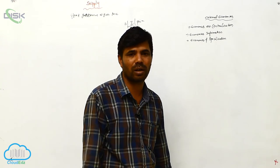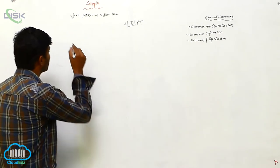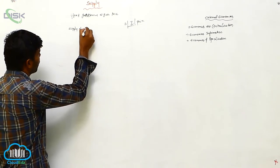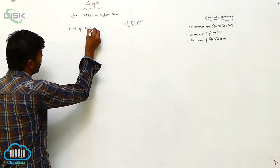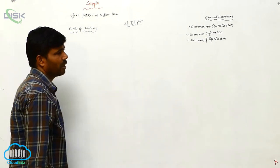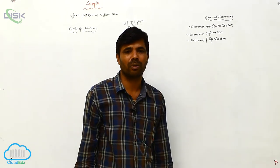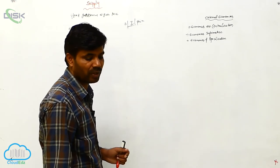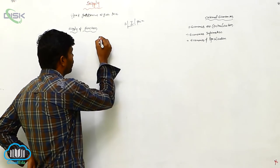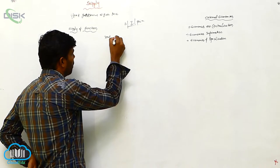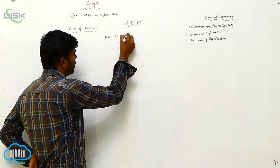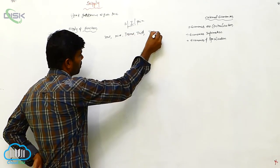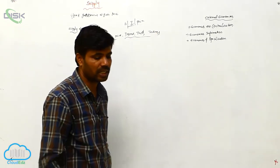Now let's discuss the supply function. Supply means offered goods at different levels of prices. The supply function shows the relationship between supply and inputs, price, income, taste, technology, and many other things we consider. The formula is: Qx = f(Px, Py, T, G...).